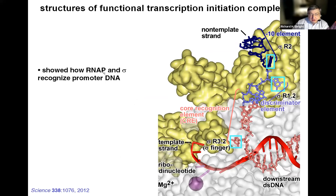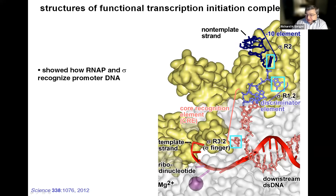These two structures showed how RNA polymerase, in gray, and the transcription initiation factor sigma, in yellow, work together to recognize the sequence of promoter DNA. The structure showed that the sequence of the region upstream of the transcription start site is recognized as single-stranded DNA within the unwound transcription bubble of the promoter—specifically recognized as single-stranded DNA on the non-template strand. Thus, sigma, in yellow, interacts with the minus-10 element, six nucleotides shown in dark blue, and the discriminator element, four nucleotides shown in light blue, making interactions—typically hydrogen-bonded interactions.